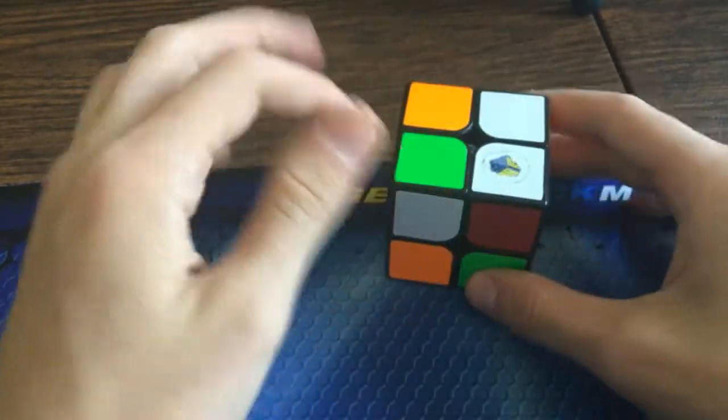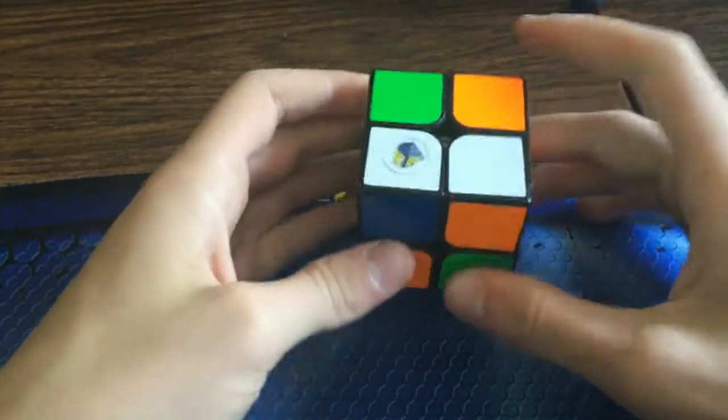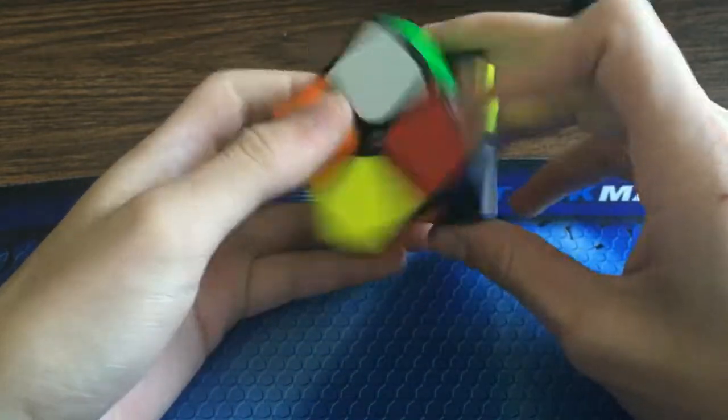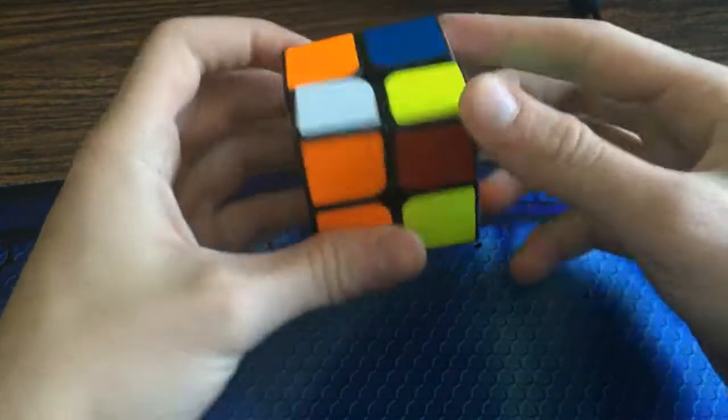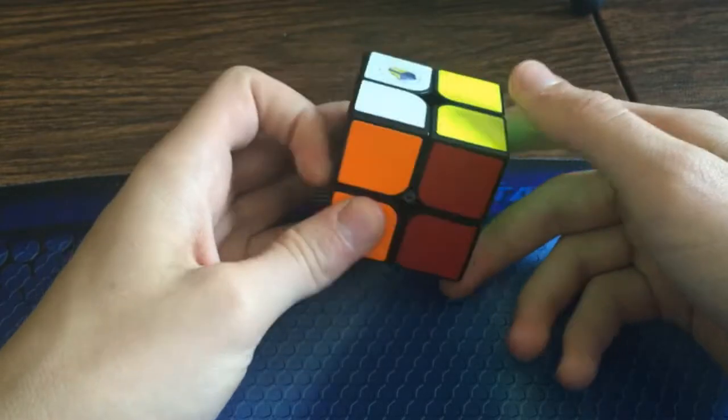So for this T case, again you start off with the U, and then it's R U' F R2 F' U R U' R2.